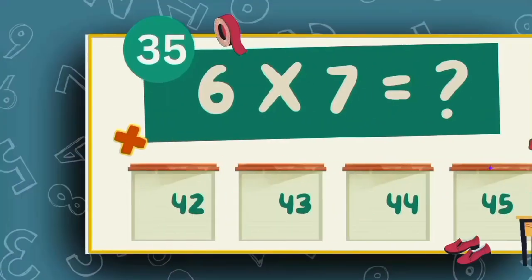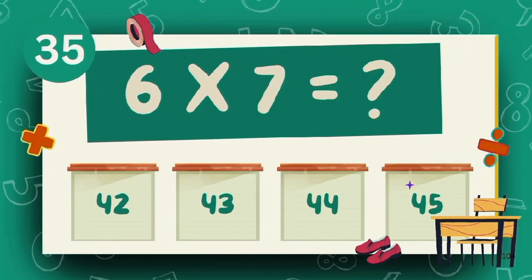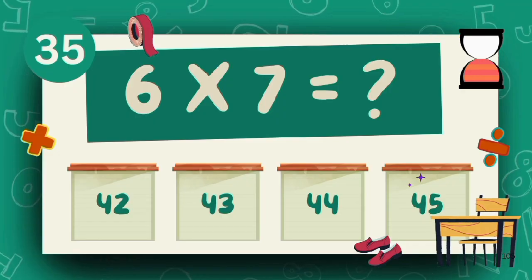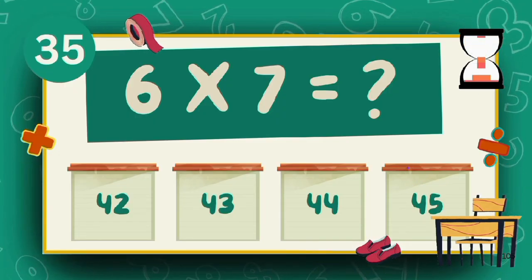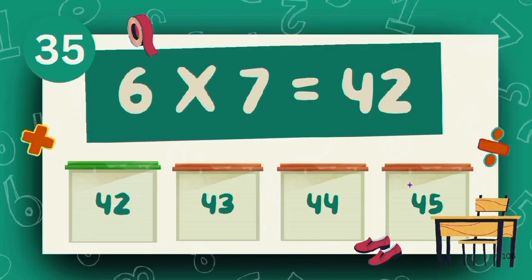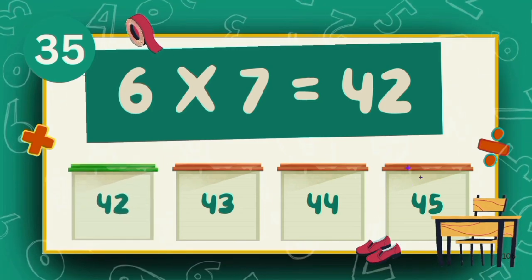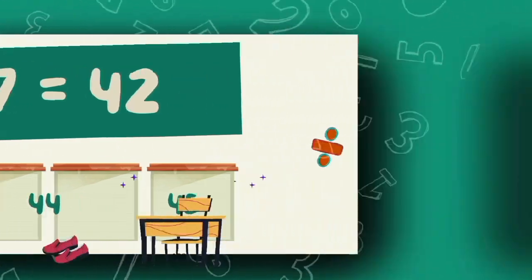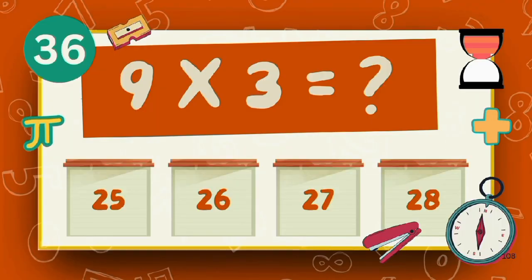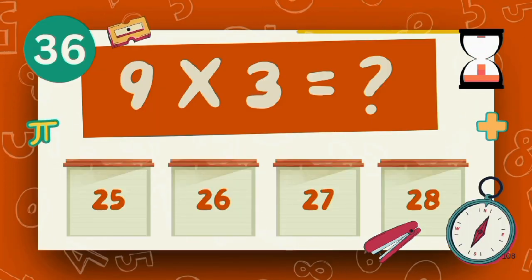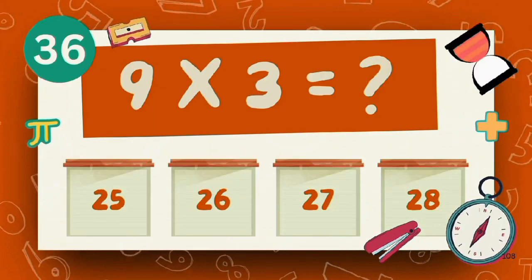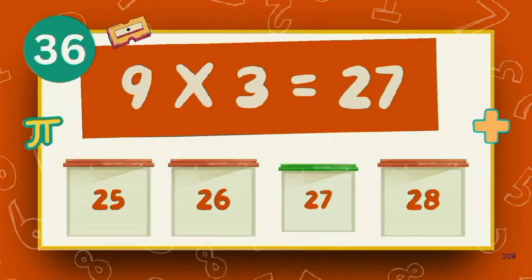What does 6 multiply 7? The answer is 42. What does 9 multiply 3? The answer is 27.